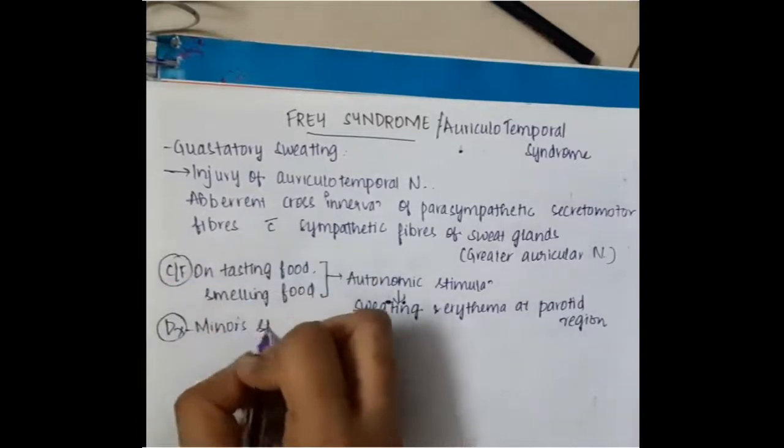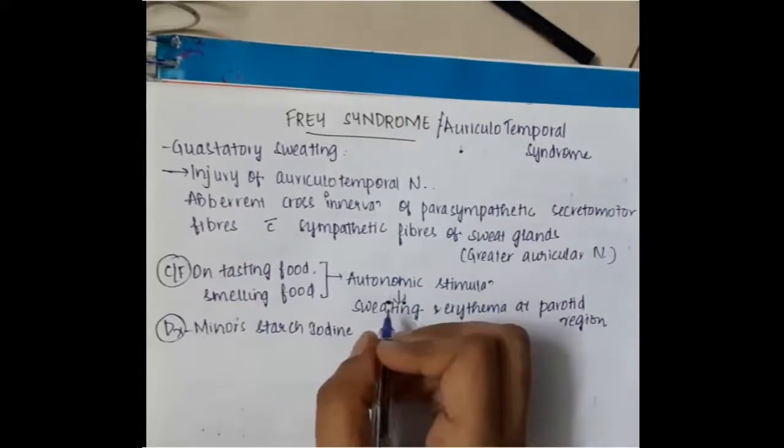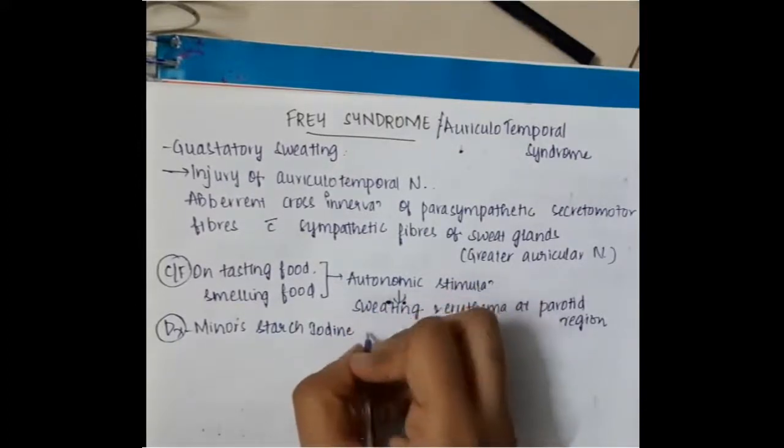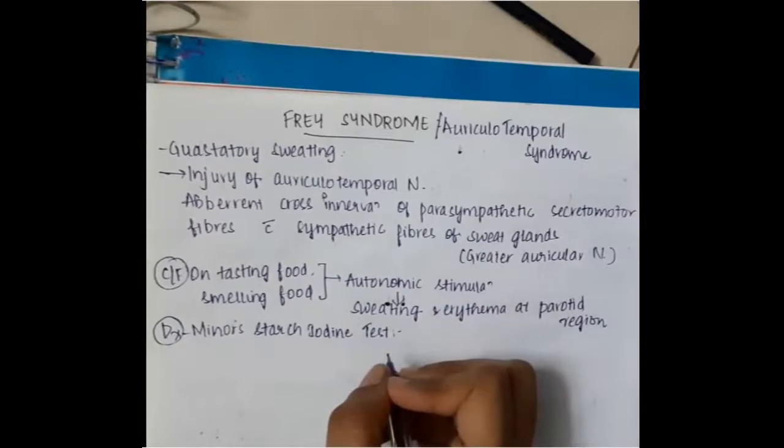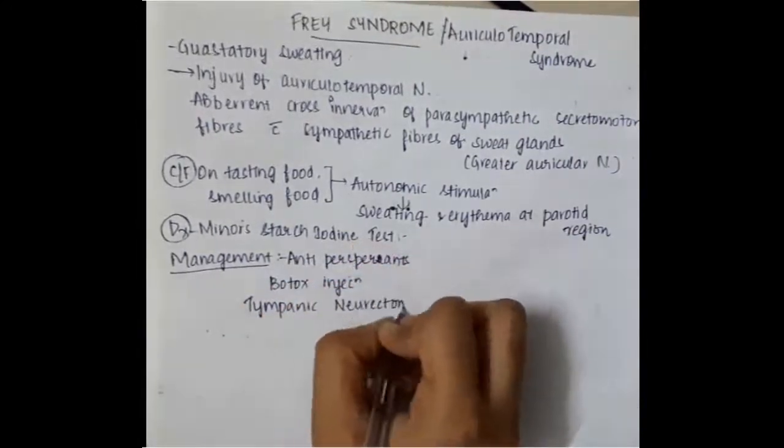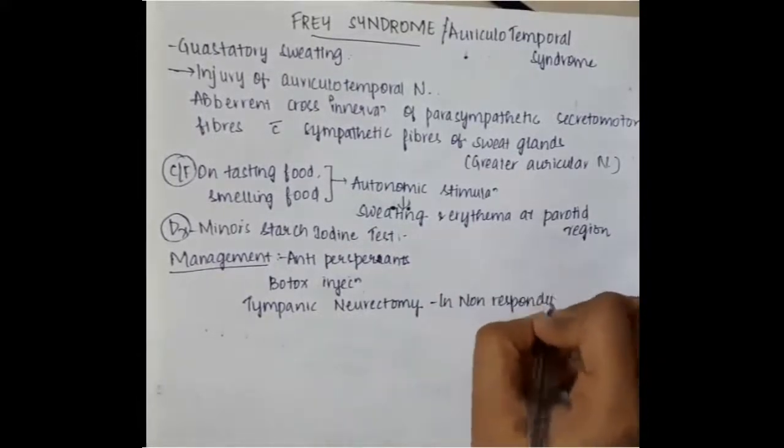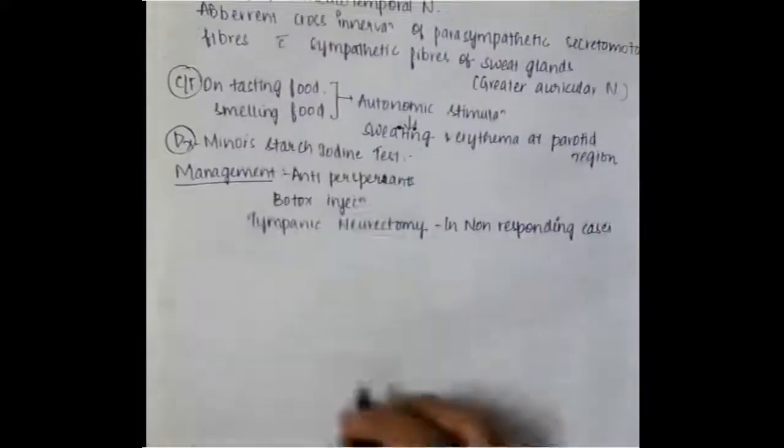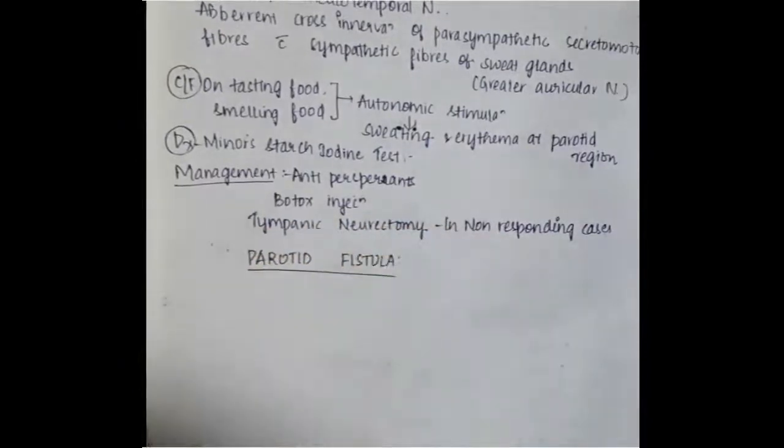Diagnosis is here we do minor starch iodine test for diagnosis of Frey's syndrome. Management includes antiperspirants can be used and Botox injections can also be used and we can also use tympanic neurectomy in non-responding cases. Minor starch iodine test is done for detection of sweat production over the parotid region.